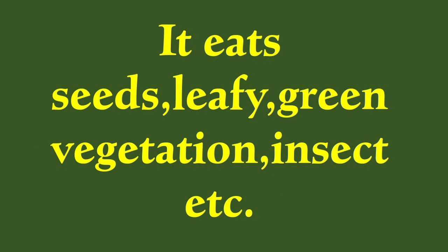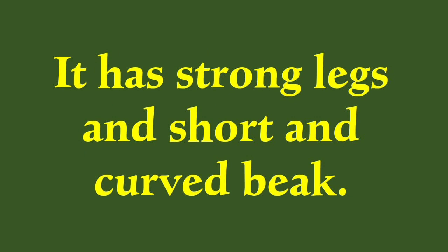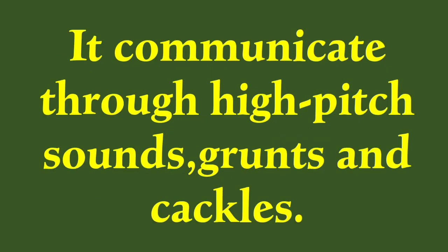It eats seeds, leafy green vegetation, insects, etc. It has a short neck, wide wings, and a long square tail. It has strong legs and a short and curved beak. It communicates through high-pitch sounds, grunts, and cackles.